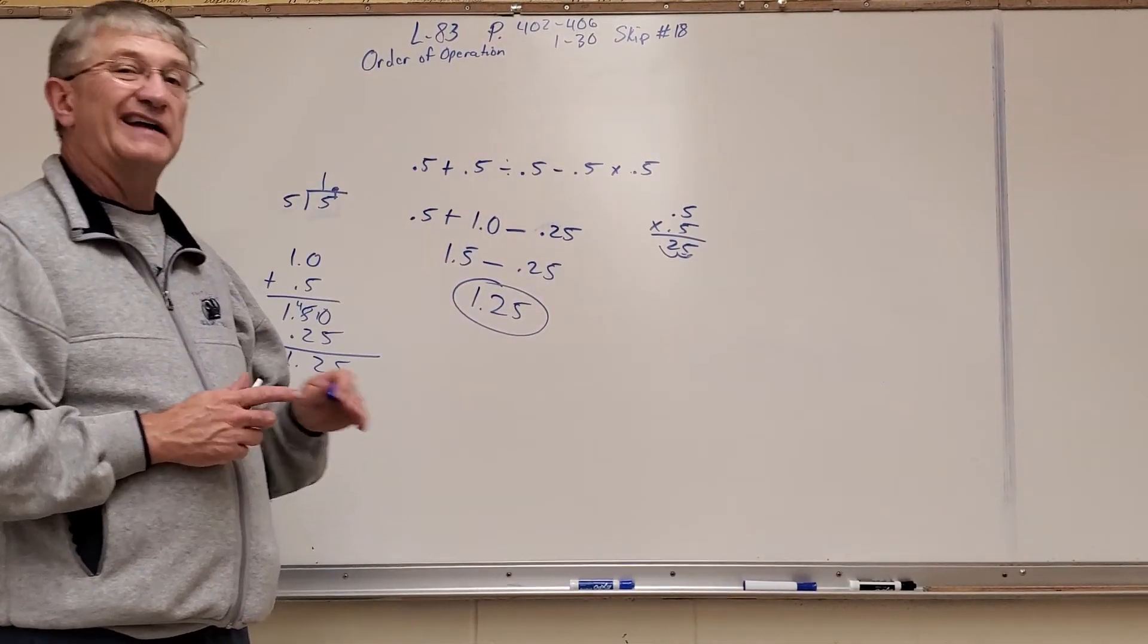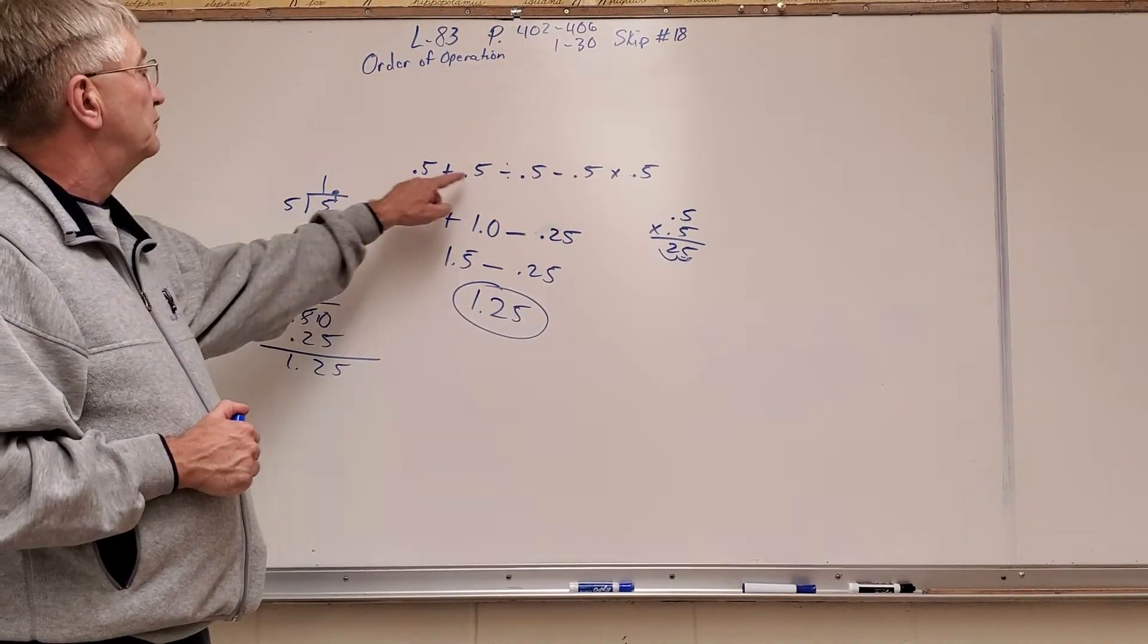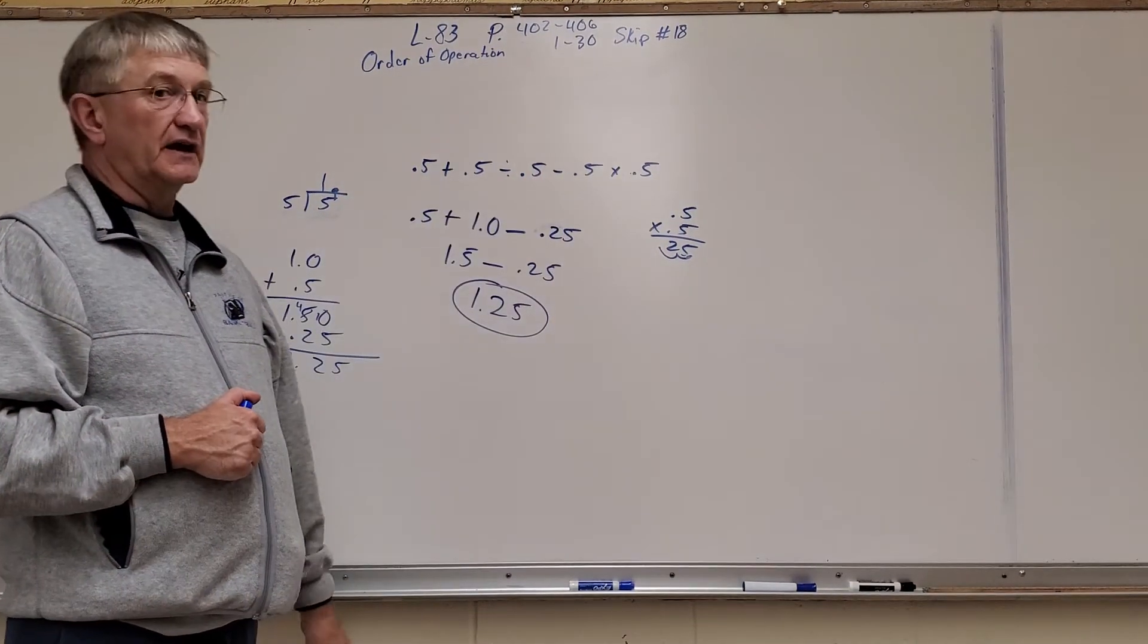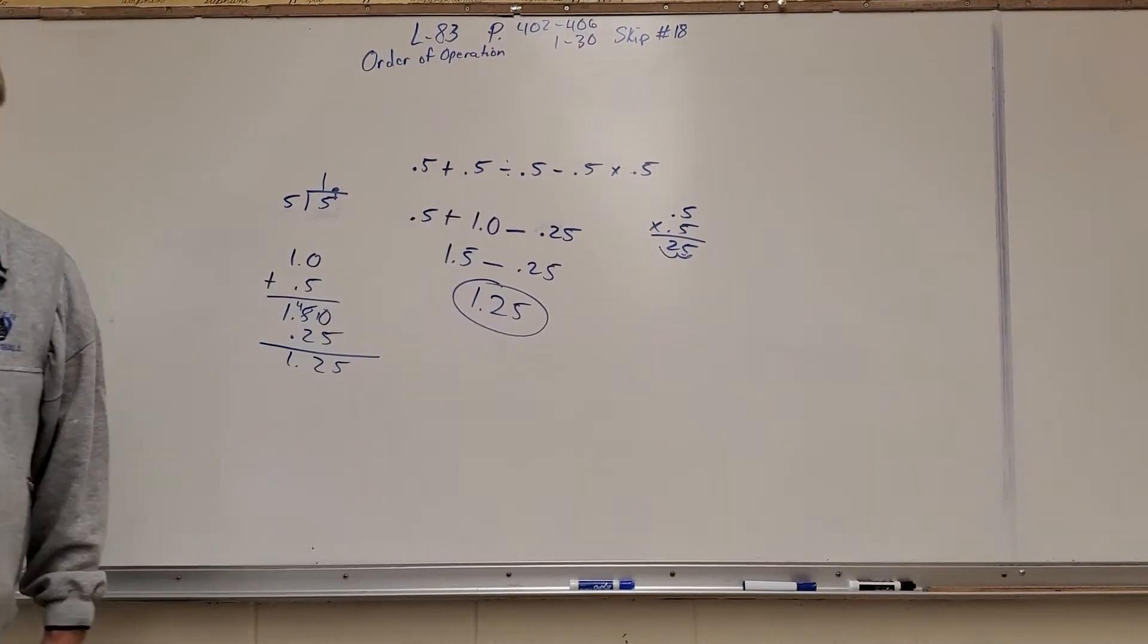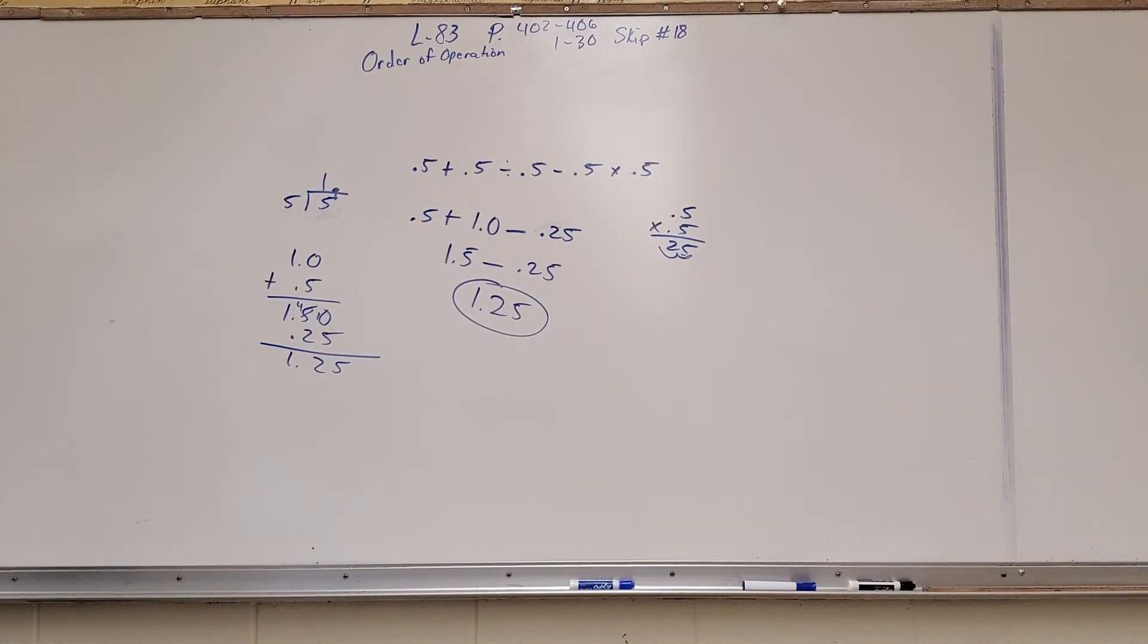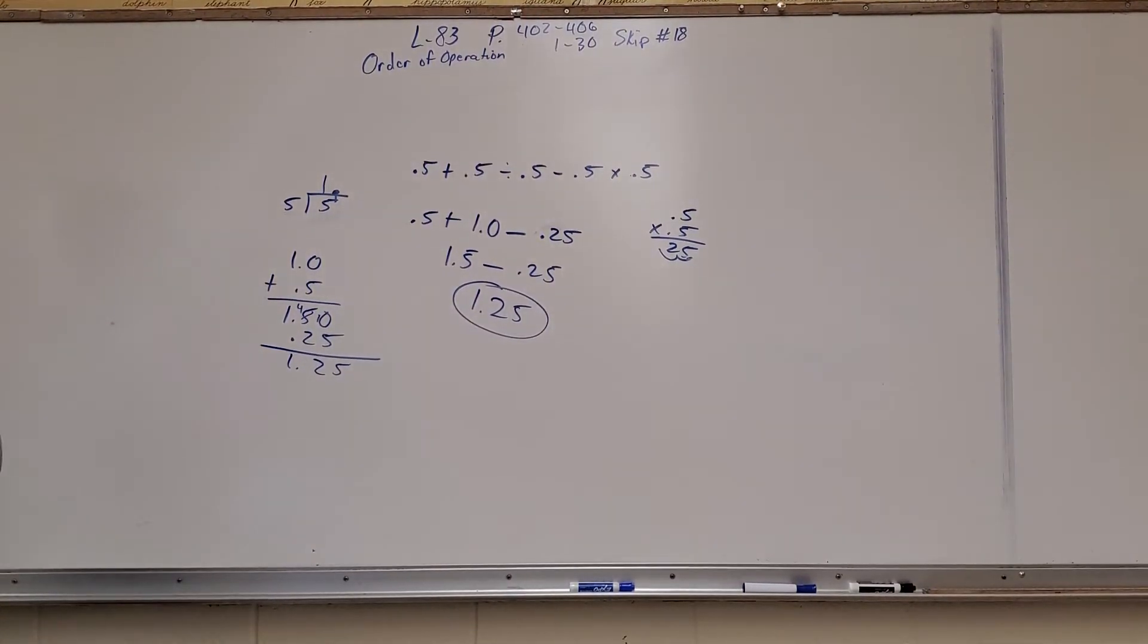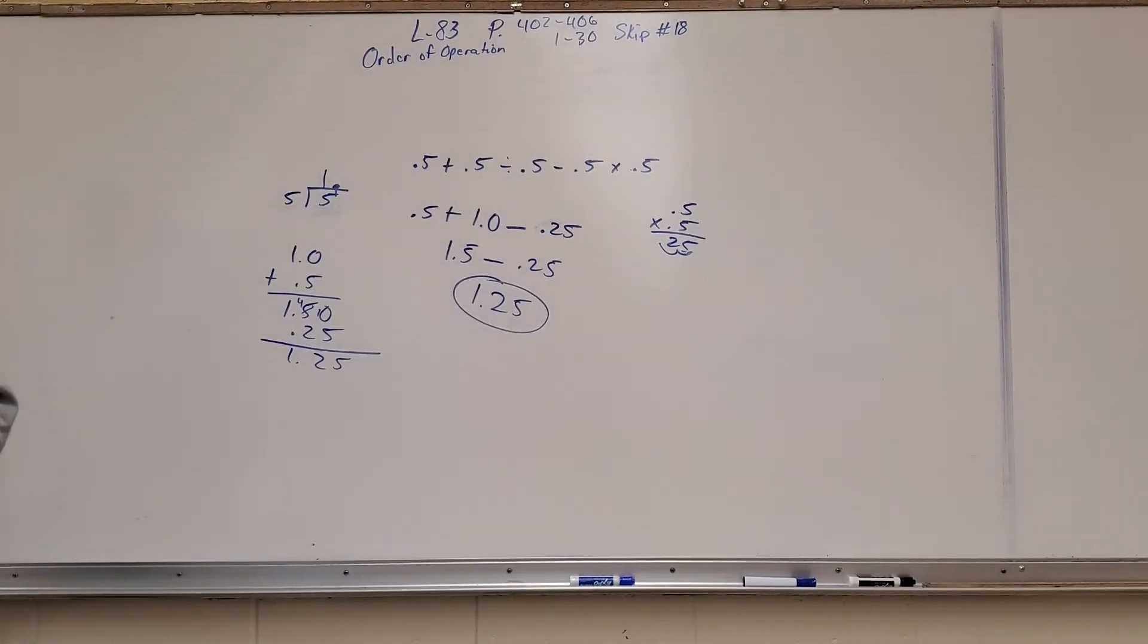But notice I did the multiplication and division first, and subtract second, and came with the final answer. If I just went straight across, in fact, if you had your calculator, and you went boom, boom, boom, boom, boom, boom, you would get a way different answer. So again, you want to make sure, follow the order of operation. Okay, and that was example 2. Let's go to example 3.